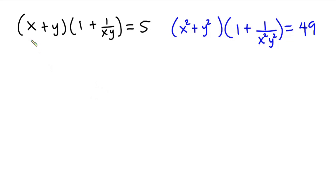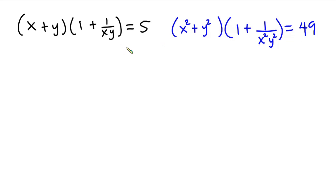Hello everyone. In this video we have this nice problem. We have (x plus y) times (1 plus 1 over xy) is equal to 5. Then we also have (x squared plus y squared) times (1 plus 1 over x squared times y squared) is equal to 49. And we have to find the values of x and y.